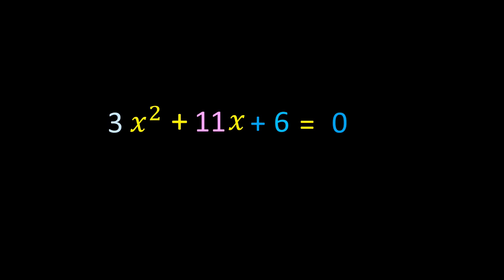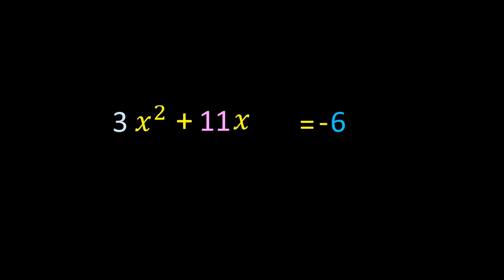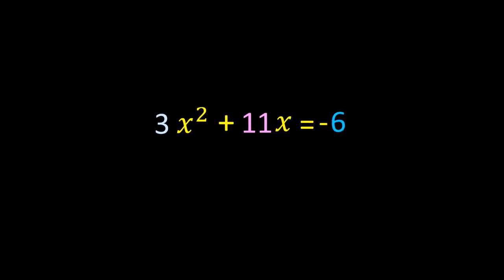To do the next step, we are going to transfer the constant +6 to the RHS. When we transfer +6 to the RHS, it becomes -6. We are left with 3x² + 11x on the LHS.